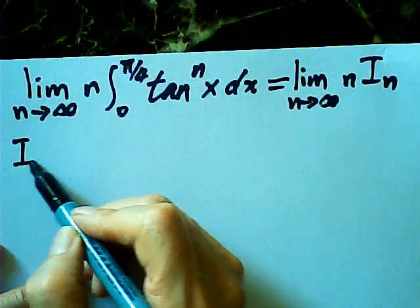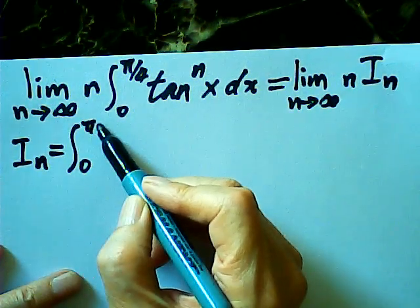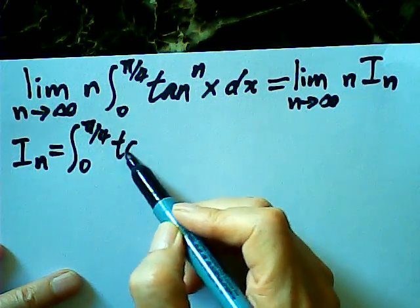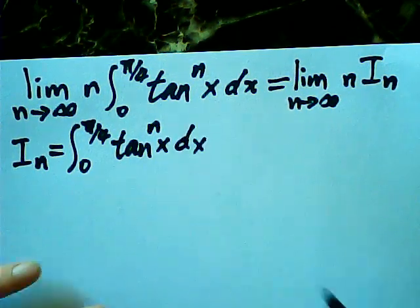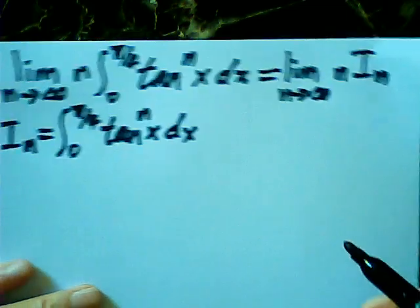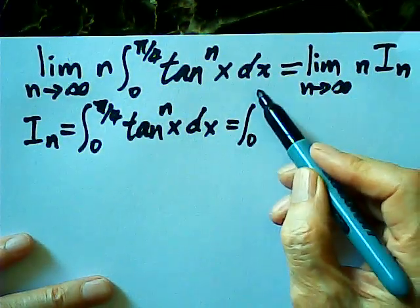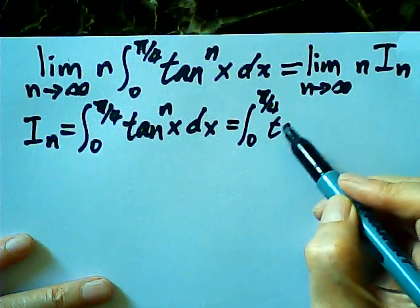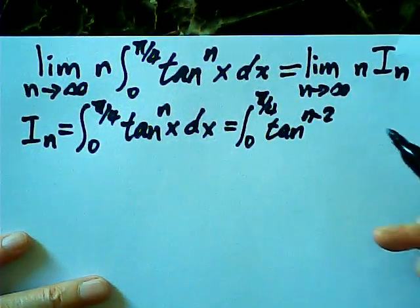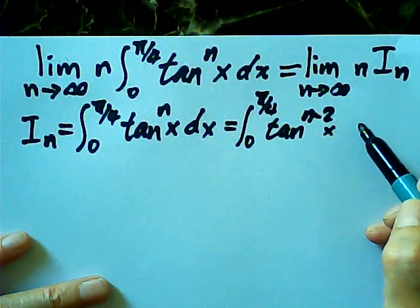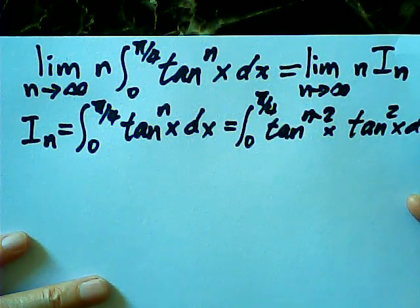I can discuss I sub n separately. I sub n is equal to the integral from zero to quarter pi of tangent to the nth power of x, dx.